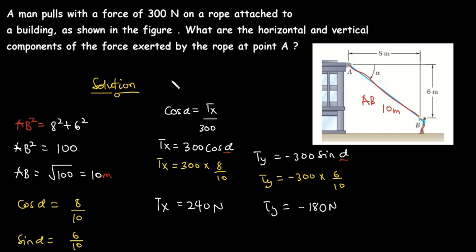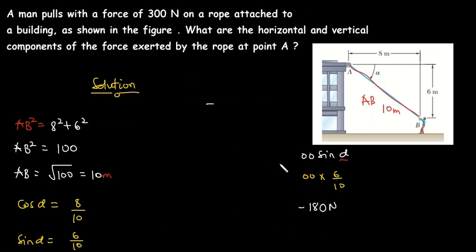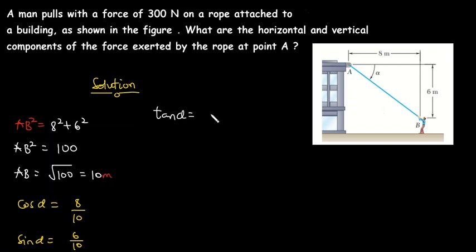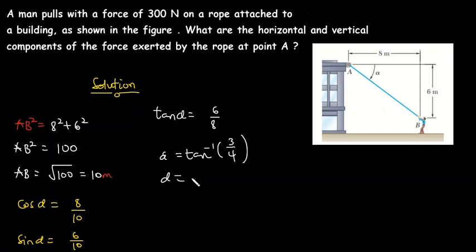For Method 2, instead of using AB, we find the angle alpha directly. tan α = opposite / adjacent = 6/8, so α = tan⁻¹(6/8) = tan⁻¹(3/4). Calculating that gives α = 36.87 degrees.